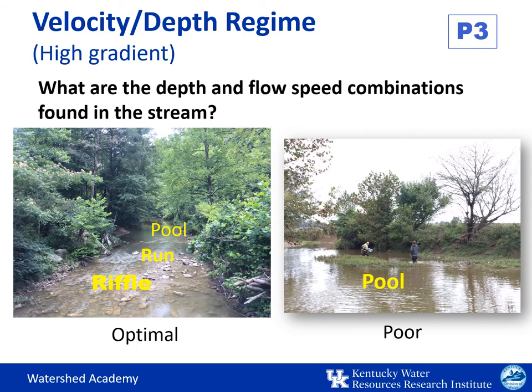Parameter number three for high gradient streams is velocity and depth regimes. Unaltered high gradient streams should display a sequence of stream velocities and depths that creates a variety of habitat types, including four velocity-depth regimes: slow deep waters called pools, slow shallow waters called glides, fast deep water called the run, and a fast shallow area called the riffle. The fewer of these profiles observed, the less ideal the stream habitat is. An example with mainly just pooled water has a lot less variety in habitat.